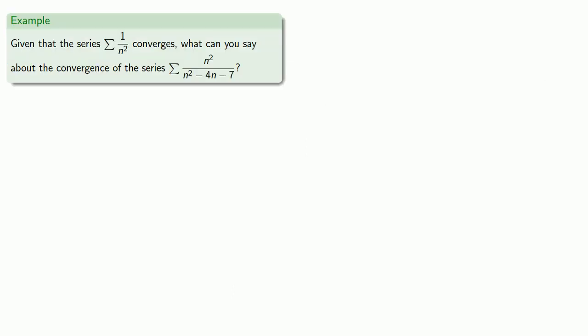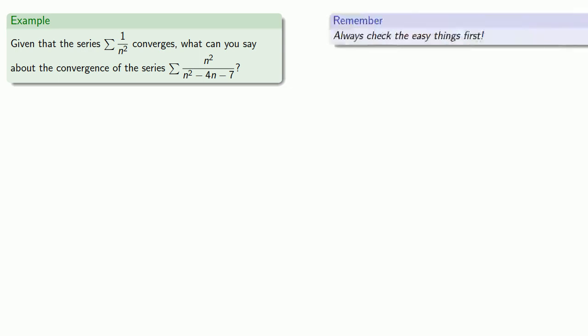Let's look at a problem. Given that we know the series 1 over n squared converges, what can we say about the convergence of the series n squared over n squared minus 4n minus 7? Problems in the real world don't come with section numbers, so here's a key idea: always check the easy things first. When dealing with series, the very first thing to check is what happens to the terms as n goes to infinity — in other words, apply the nth term test.